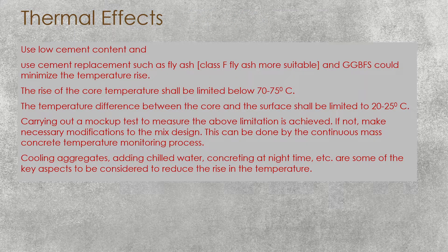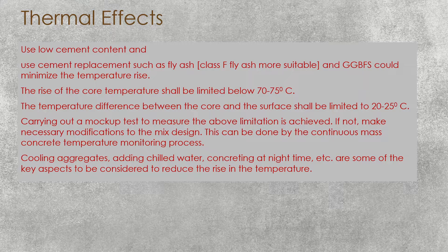Thermal effects: since we use low cement content due to low characteristic strength, thermal effects are less compared to other types of concrete. However, with very large concrete pours there will still be issues. We use cement replacements such as fly ash and GGBS to minimize temperature rise. The core temperature should be limited to the range of 70–75°C; otherwise there is a possibility of delayed ettringite formation, which causes cracking by increasing the internal volume of the concrete.